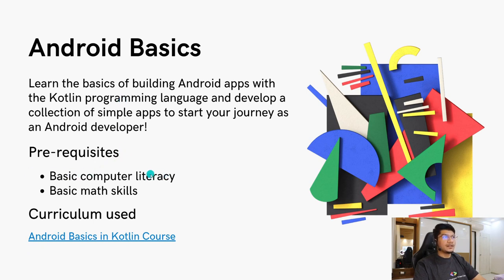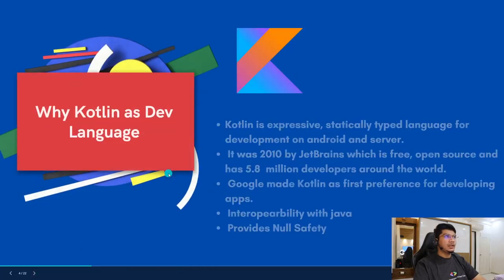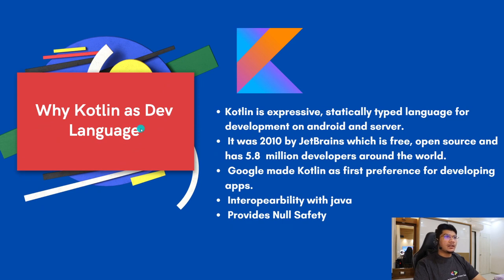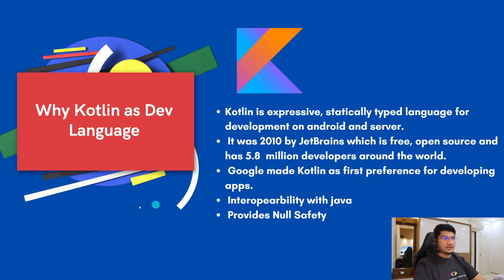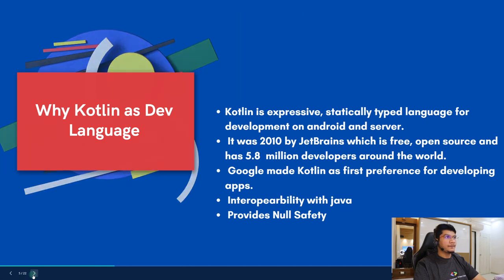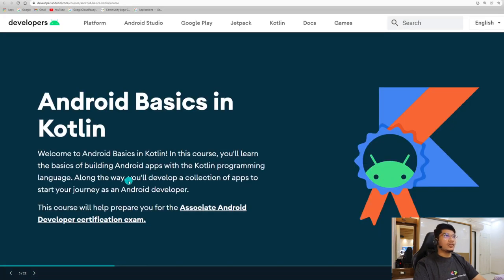Why Kotlin as a developer language? There are enormous reasons why Google recommends us to use Kotlin over Java, and a few of those reasons are shown on screen. Kotlin is an expressive, statically typed language for development. It was developed by JetBrains in 2010 and has over 5.8 million developers around the world. Google made Kotlin the first preference for developing apps.